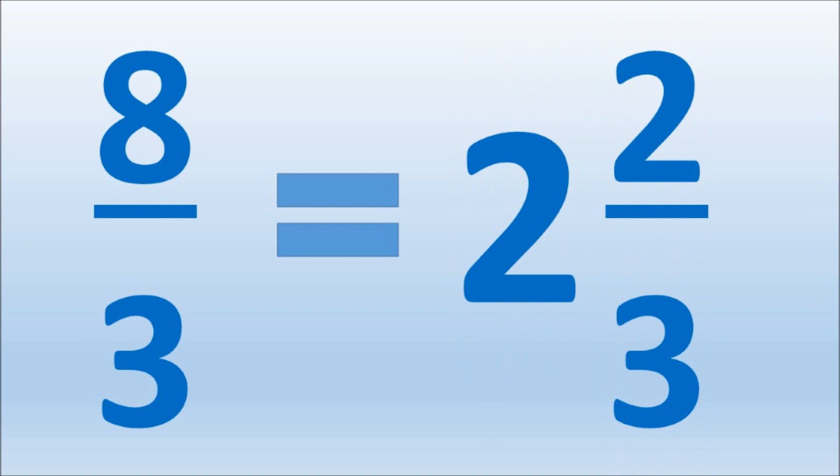To look at it again, 3 goes into 8 two times with a remainder of 2, and the denominators remain the same.